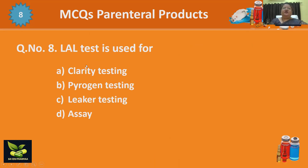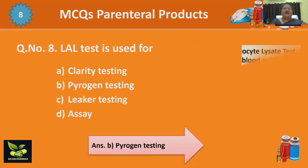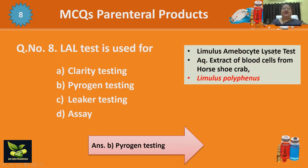Next is the LAL test. LAL is an aqueous extract of blood cells from the horseshoe crab, whose scientific name is Limulus polyphemus. There are two key facts: horseshoe crab lysate is used in this test, and it is used for pyrogen testing. In the procedure, if a gel forms in the presence of the lysate, it means pyrogen is present; if no gel forms, pyrogen is absent.